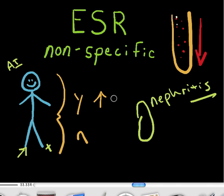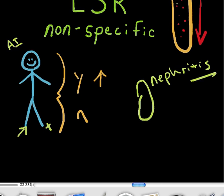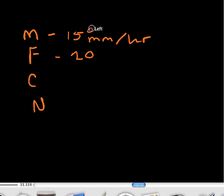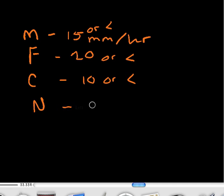That's something to think of if you've ever seen an ESR result that comes back decreased. Some normal values for an ESR test: it's different for males versus females, and also different for children and newborns. For males, it's up to 15 millimeters per hour — so 15 or less. For females, it can be up to 20 — so 20 or less. For a child, it's up to 10 or less. For a newborn, it's around 2 or less. Remember, that's measured in millimeters per hour.